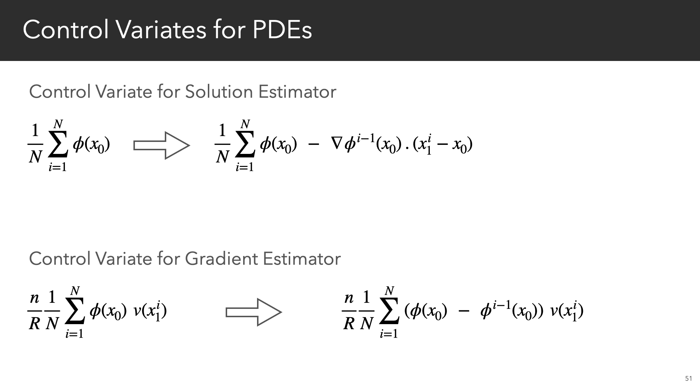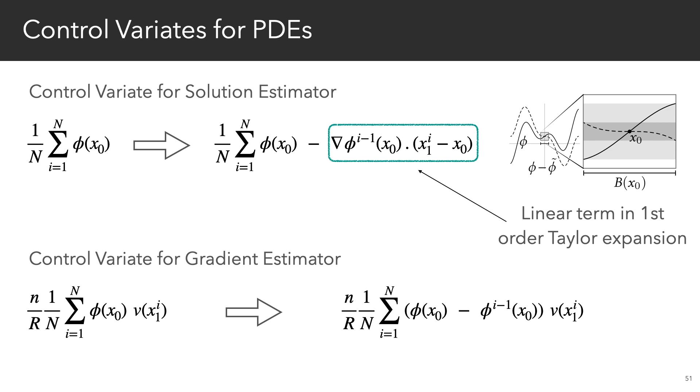So in the paper, we provide some simple control variates for the various estimators computed with walk-on spheres. For the solution estimator, we choose the control variate to be the linear term of the first-order Taylor expansion of the solution around the center of the ball. And for the gradient estimator, we simply subtract the solution estimate from the previous walks and multiply it with the unit outward normal.